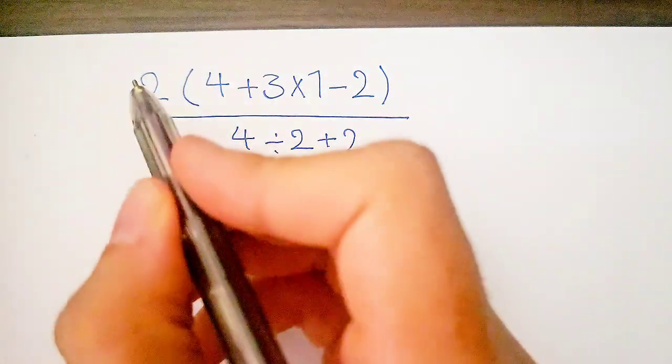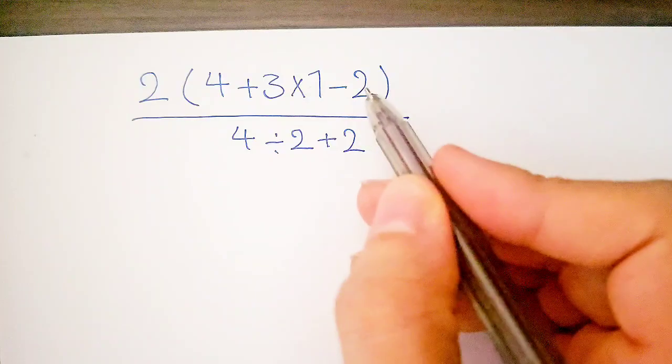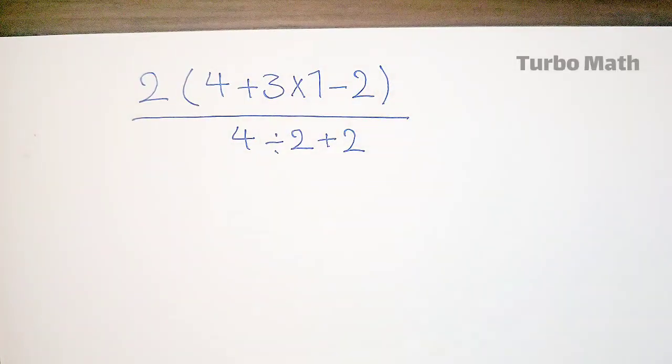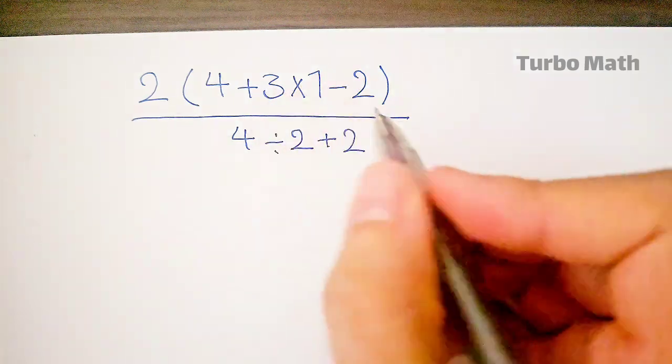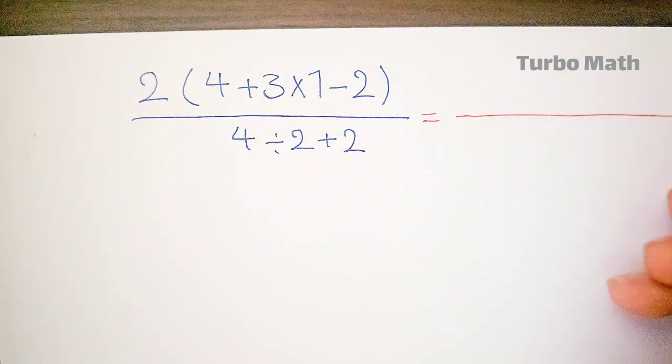Hi guys, welcome to Turbo Math channel. Can you solve this question? 2 times (4 plus 3 times 1 minus 2) divided by (4 divided by 2 plus 2). First we simplify the numerator and the denominator of the fraction.